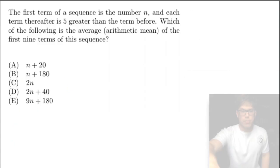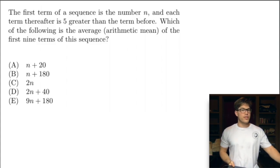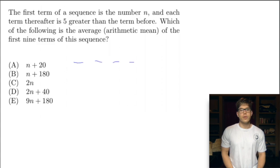Let's see our first problem. The first term of a sequence is the number n, and each term thereafter is 5 greater than the term before. Which of the following is the average arithmetic mean of the first nine terms of this sequence? We have nine terms starting with n and then we're going to increase by 5 each time. So this is n plus 5, n plus 10, 15, 20, 25, 30, 35, 40 will be our last.